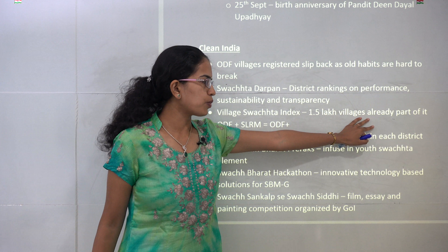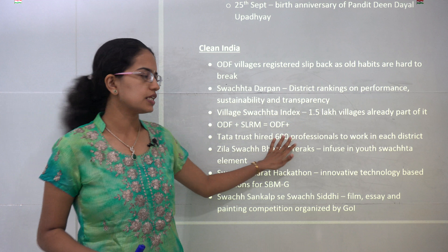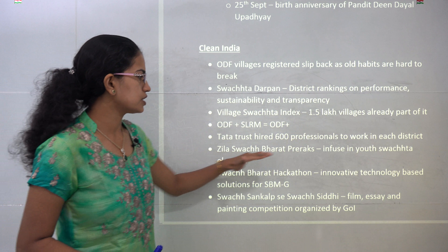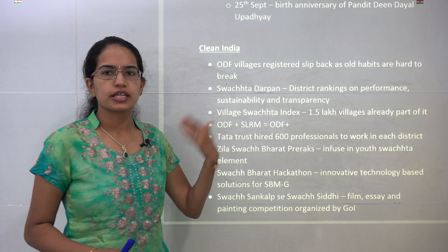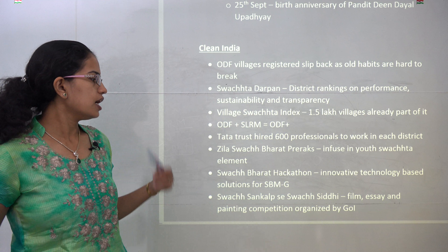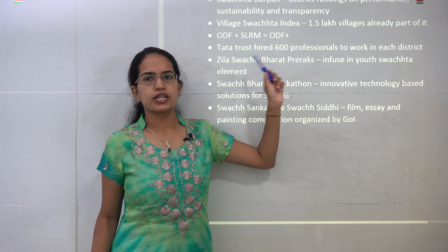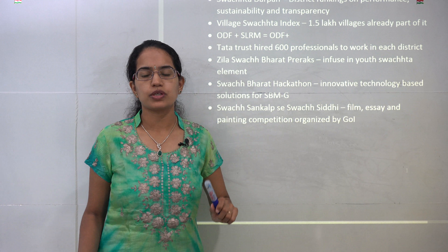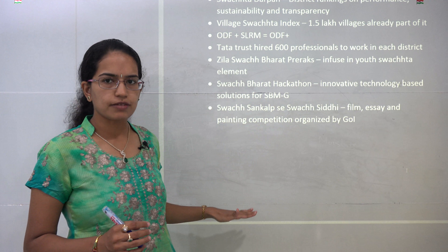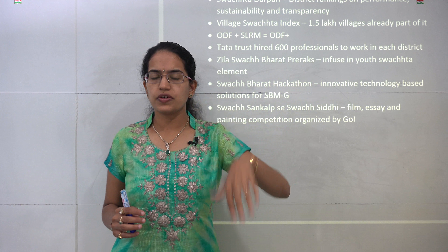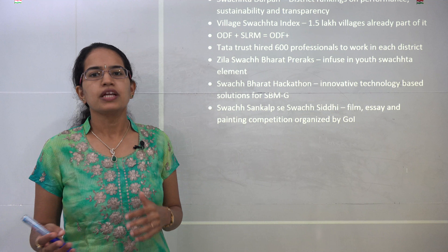October is important because it has numerous birth anniversaries. On 2nd October, you have the birth anniversary of Mahatma Gandhi and Lal Bahadur Shastri. 11th October is the birth anniversary of Jai Prakash Narayan and Nanaji Deshmukh. 25th September was the birth anniversary of Pandit Deen Dayal Upadhyay. Because of these, October has been considered a month to achieve cleanliness and give a drive for cleanliness.